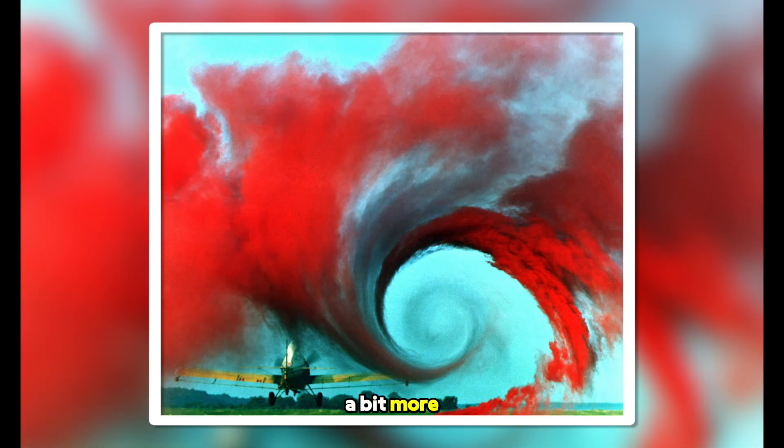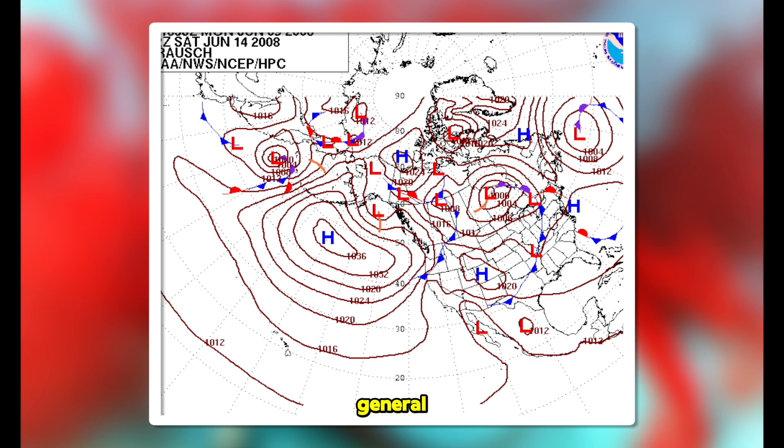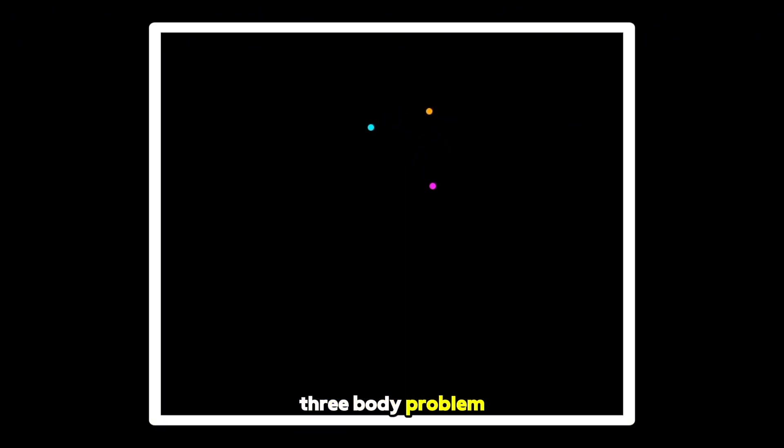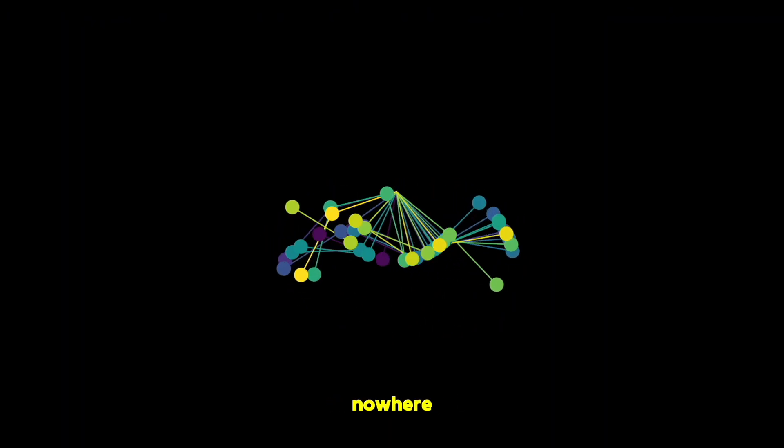A couple of examples that are a bit more physical include turbulence and weather forecasting in general. Also the famous three body problem, which is chaotic for most, but not all initial conditions. And of course, I can't complete a video on chaos without showing the famous double pendulum. Here we have 15 double pendulums with a very minor difference in initial conditions. Now chaos seems to emerge out of nowhere.